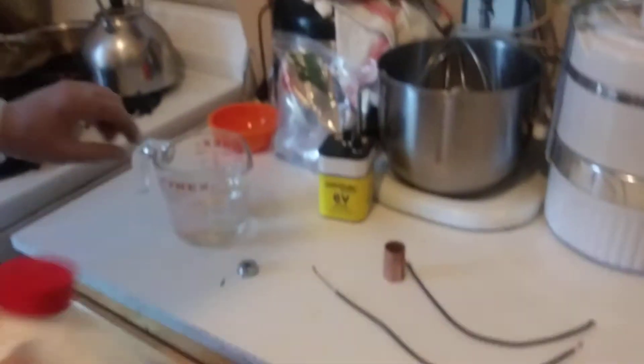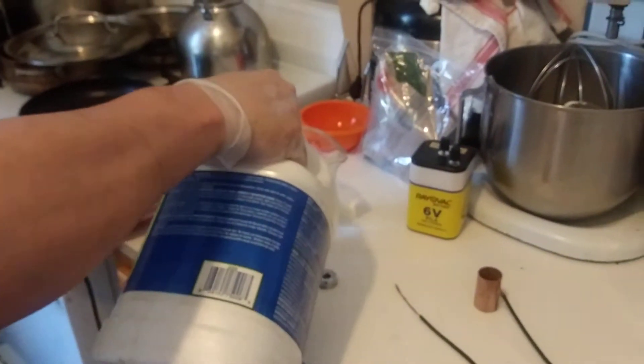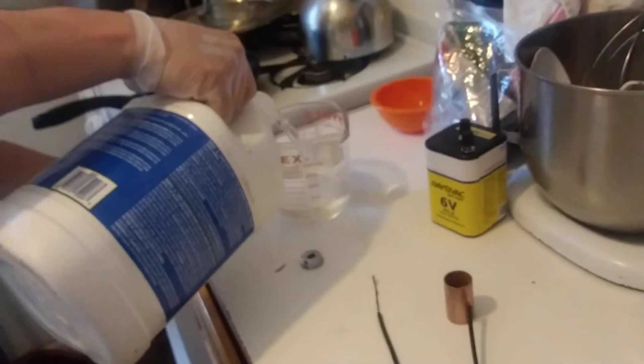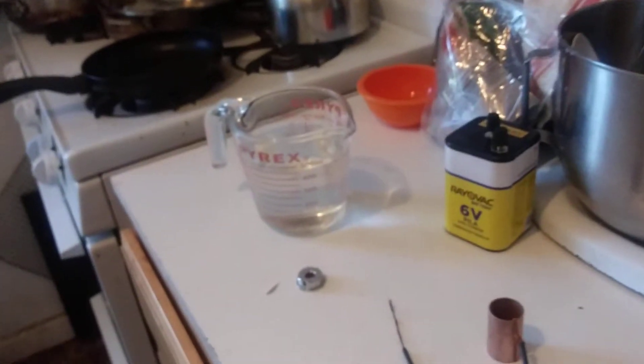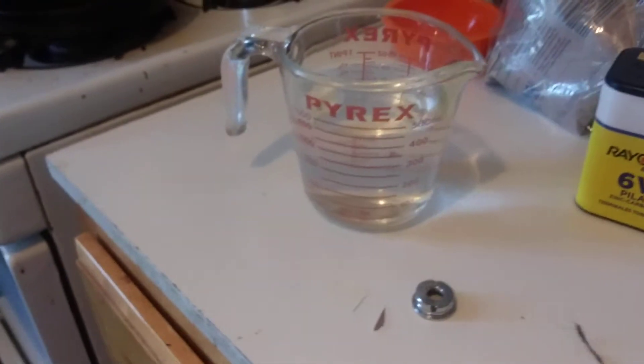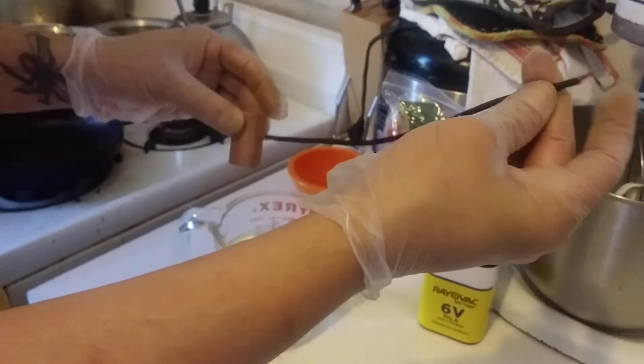Basically, to the 350 milliliters we're going to add 100 milliliters of the acid. This is going to create an electrolyte so everything will transfer easily.